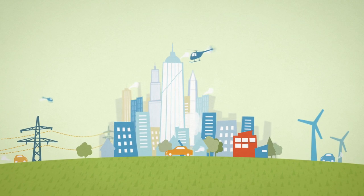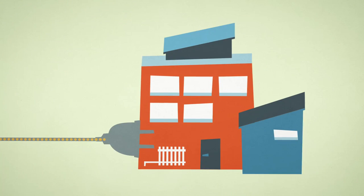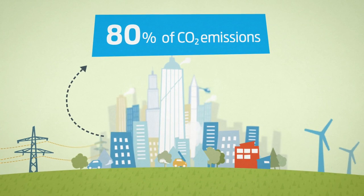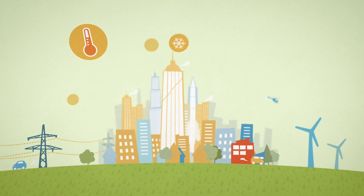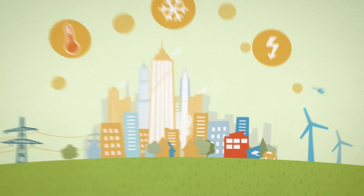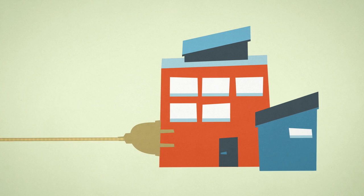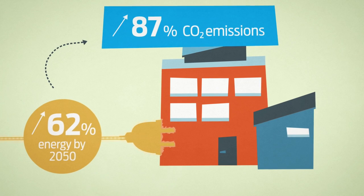Of all the energy that is used around the world, nearly a third is consumed by the building sector. In large cities, 80% of carbon emissions can come from energy used to heat, cool, and power buildings. Over the next few decades, the amount of energy used by the building sector will increase dramatically, and so will the amount of related emissions.